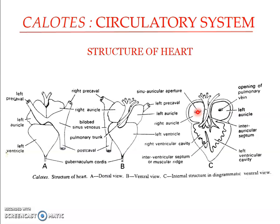The ventricle is thick-walled compared to the auricles — muscular, spongy, and triangular in shape. Its cavity is incompletely divided into two by an inter-ventricular septum. The right half is known as the cavum pulmonale and the left half is known as the cavum dorsale. The inner layer is projected into interlacing ridges known as columnae carneae.